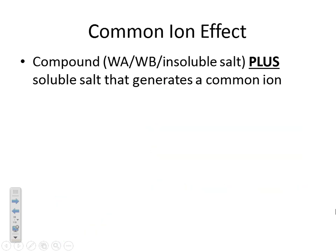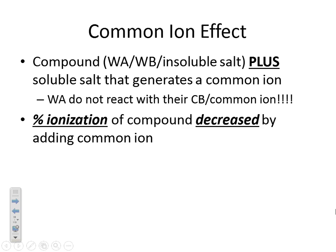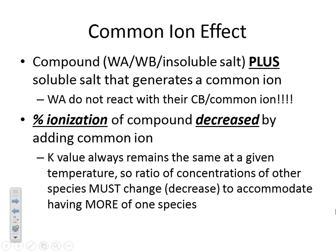The common ion effect, put another way: if you have a compound plus a soluble salt that generates a common ion, remember that weak acids do not react with their conjugate bases — NH3 does not react with NH4+, they're conjugates of one another. The big point is that the left shift towards the reactants cuts down on the percent ionization of your compound. It could be the percent ionization of your acid, the percent dissociation of your base, or the percent dissociation of a Ksp of an insoluble salt. Having an ion that's already part of the equilibrium reaction as a product will push everything back towards the reactant side and really cut down on the percent ionization of that reactant.